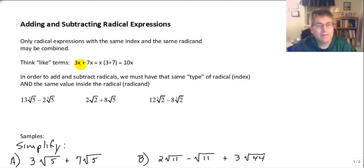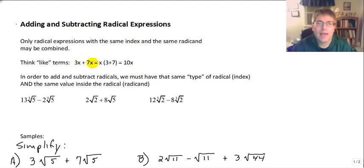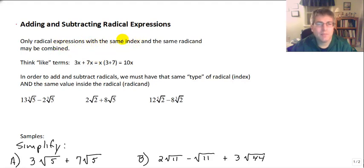When we add and subtract like terms, we need to have the same variables in each term with the same exponents on those variables. With radical expressions, we need the same index and the same radicand.